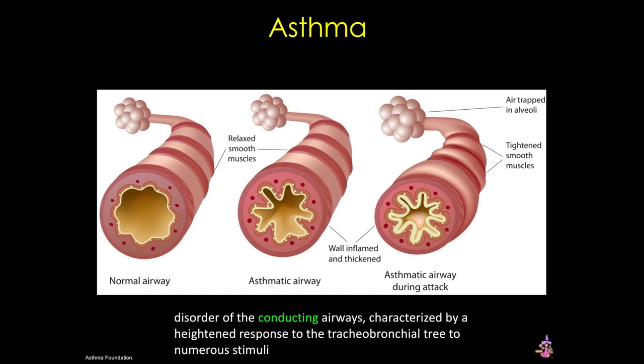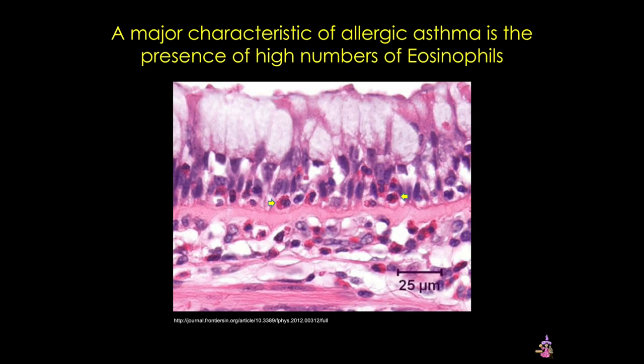Aberrant regulation of airway function can also cause asthma, and this can be caused by stress, exercise, illness, exposure to extreme weather conditions, or even medications. There are three main features of the hyper-responsive airways seen in asthma patients.